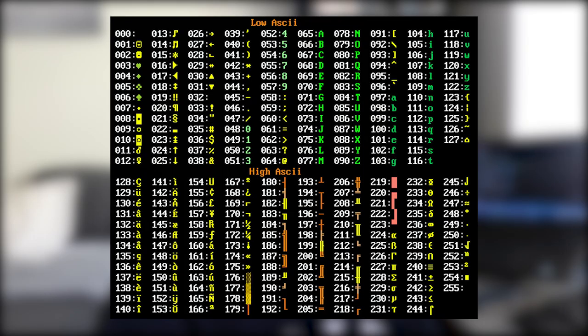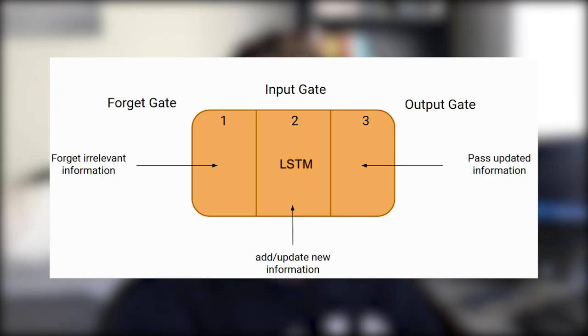Recurrent neural networks are best used for sequence data, and in the case of passwords, it's sequences of characters. All the network does is take in a single character and then predict what the next character should be. As it receives more and more characters, it begins to build up somewhat of an internal memory, and that internal memory is what we're going to use to predict passwords. So we have a recurrent neural network.